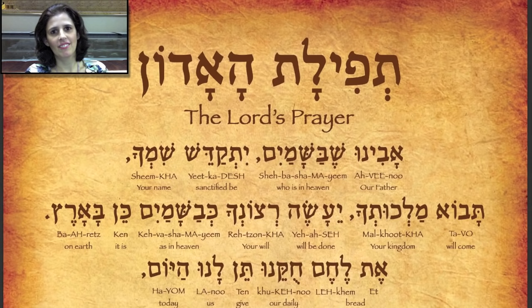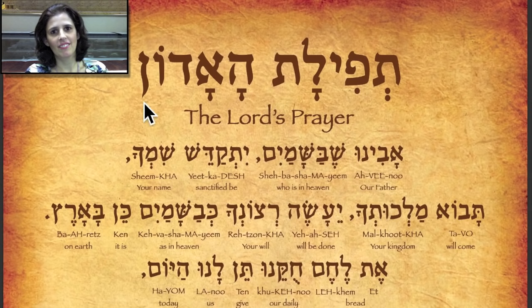The Hebrew title of the poster, Tefilat Ha'adon, means the Lord's Prayer. The word Tefilat means 'the prayer of' and the word Ha'adon means 'the Lord.' Together they mean the Lord's Prayer, or the prayer of the Lord. First I will read the entire prayer in fluent Hebrew, then we will go over and pronounce each word slowly syllable by syllable. We will then read the entire prayer once again, this time a bit faster. Now let's begin.